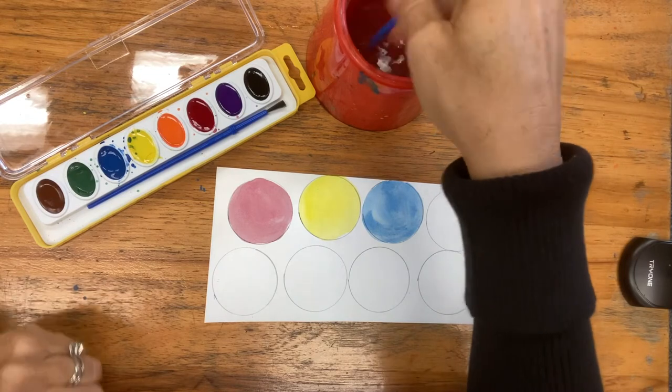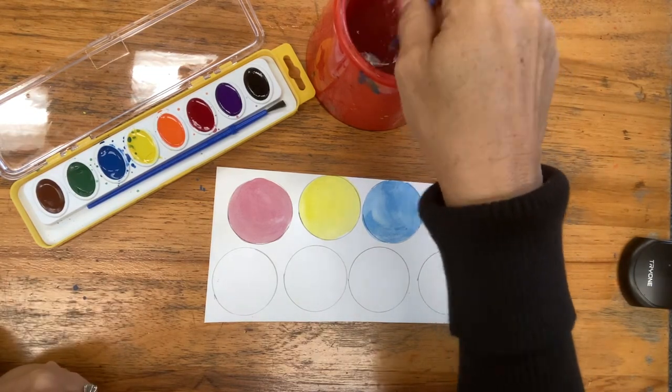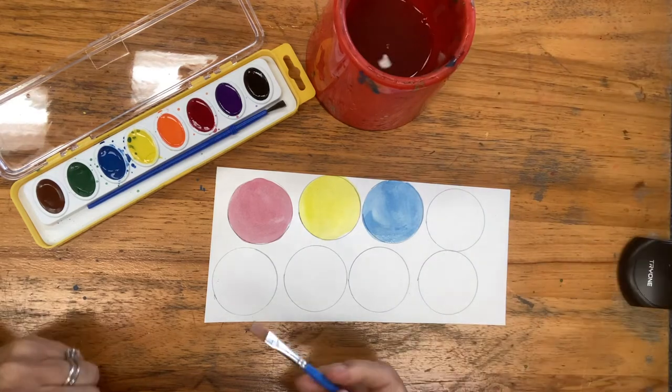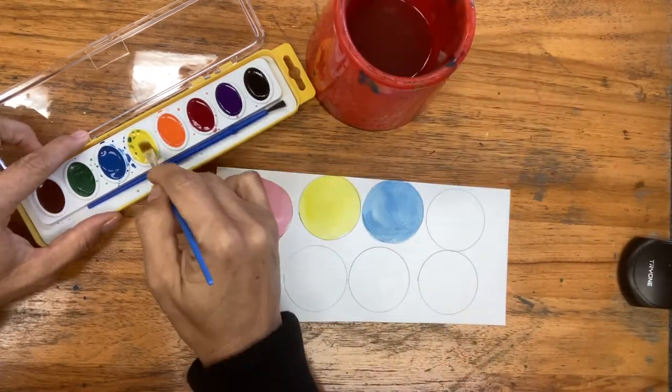All right, now I'll rinse my brush and I'll start to make my secondary colors. So maybe I'll start with my yellow and red and make orange. So I'm going to take my yellow, get it nice and wet.